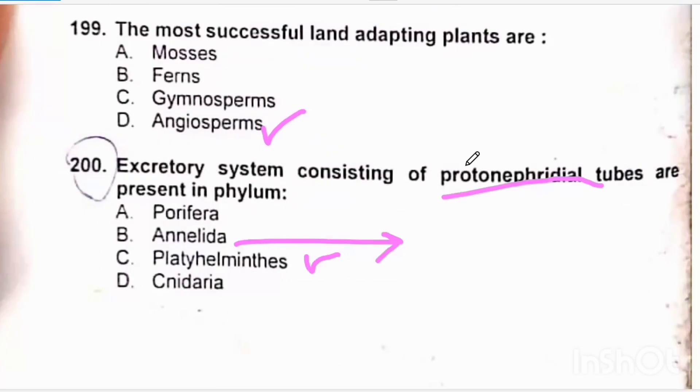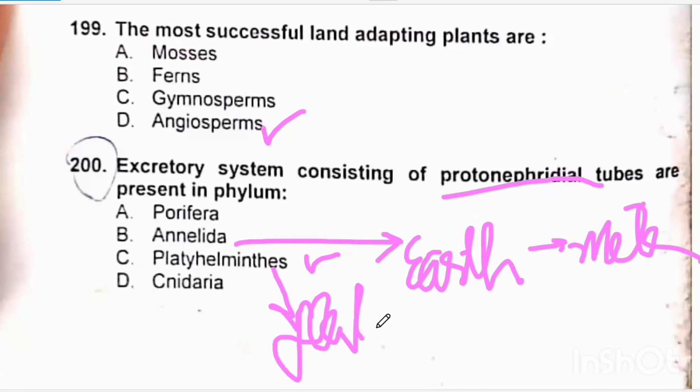Excretory system consisting of protonephridial tubes are present in phylum Platyhelminthes or flatworms. There are tubules that are called protonephridial tubes. And earthworms or annelids, also called earthworms, also have a tubular excretory system but that is called metanephridium. Platyhelminthes or flatworms have the tubular excretory system called protonephridium. That is the statement of our MCQ, so we will pick up the option called delta.